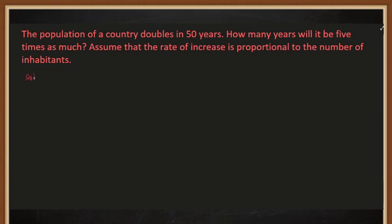Our formula will be ln(P) equals KT plus ln(C). For the first initial condition, at T equals zero, that is the initial time, our P will be equal to P sub zero. Substituting that, we have ln(P) equals KT plus ln(C).